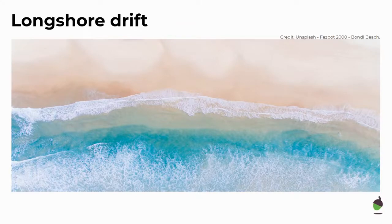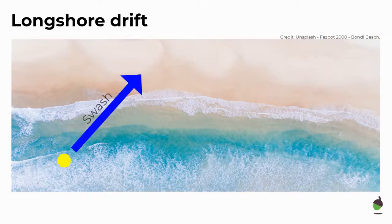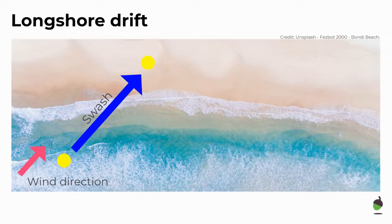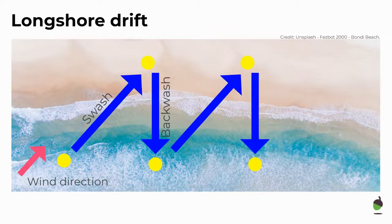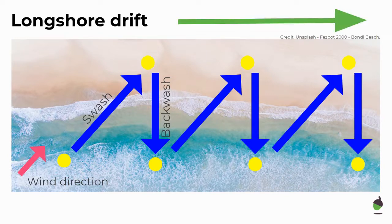Let's have a look at that as a diagram. Waves swash up the beach and that angle is determined by the prevailing wind. The waves carry sediment with them. Backwash returns the water back to sea, straight back down due to gravity. As that continues, the sediment is moved further and further along the coast as longshore drift. Longshore drift goes in the direction of the prevailing wind.